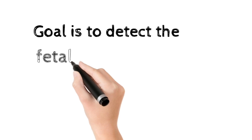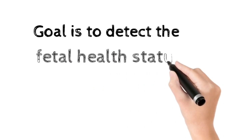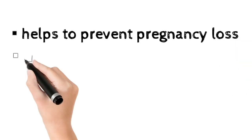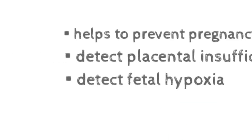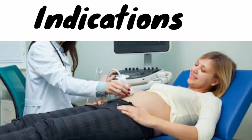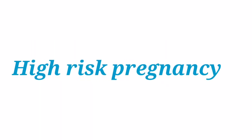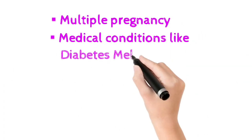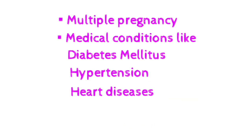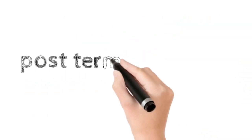Those two procedures are ultrasonography and non-stress test. The main goal of fetal biophysical profile is to detect abnormality or fetal health status, through which we can prevent pregnancy loss. We can also detect placental insufficiency or fetal hypoxia. Mostly we perform this biophysical profile in high-risk pregnancies, such as multiple pregnancy with complications or medical conditions like diabetes mellitus, high blood pressure, and heart disease.